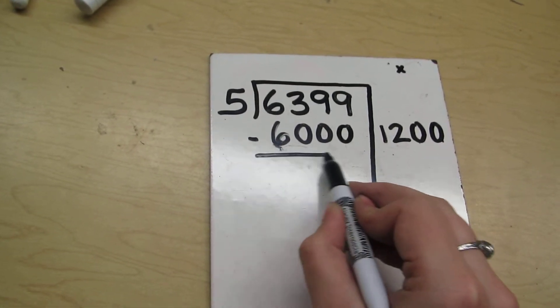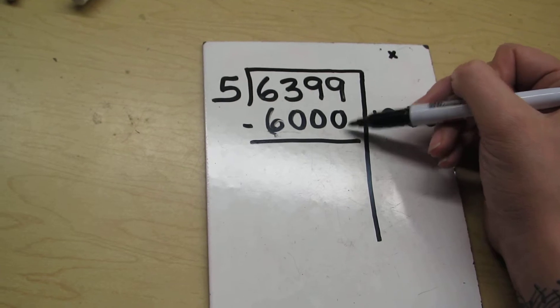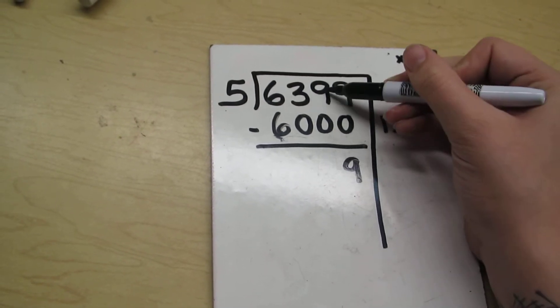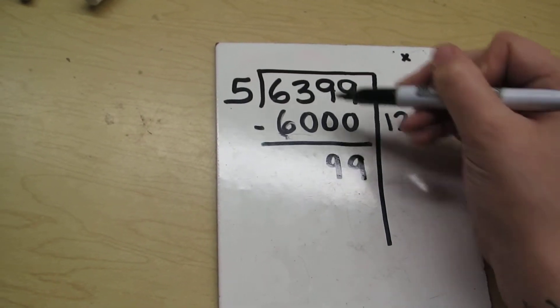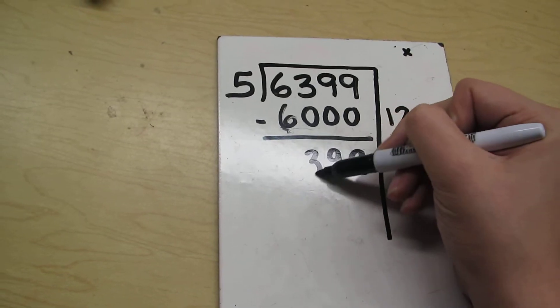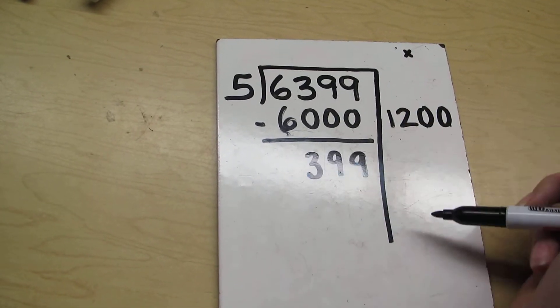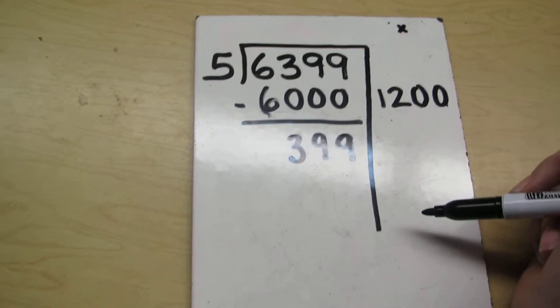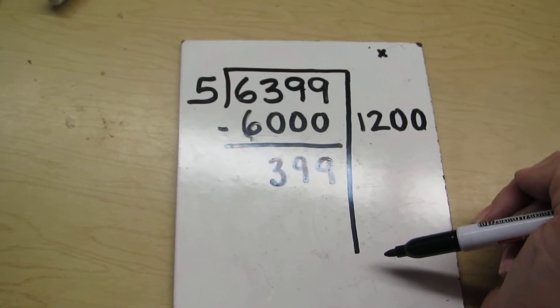I do my subtraction. 9 minus 0 is 9. 9 minus 0 is 9. And 3 minus 0 is 3. 6 minus 6 is 0. I'm not going to put anything there. So now I have 399 to work with.